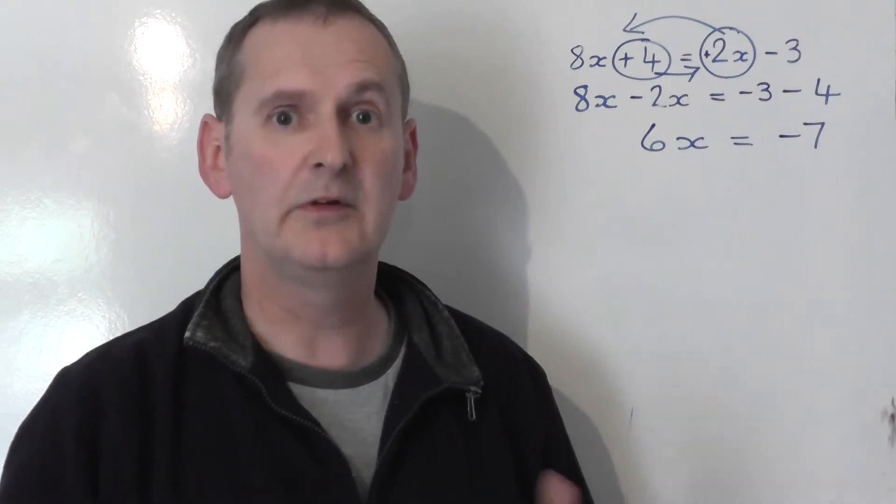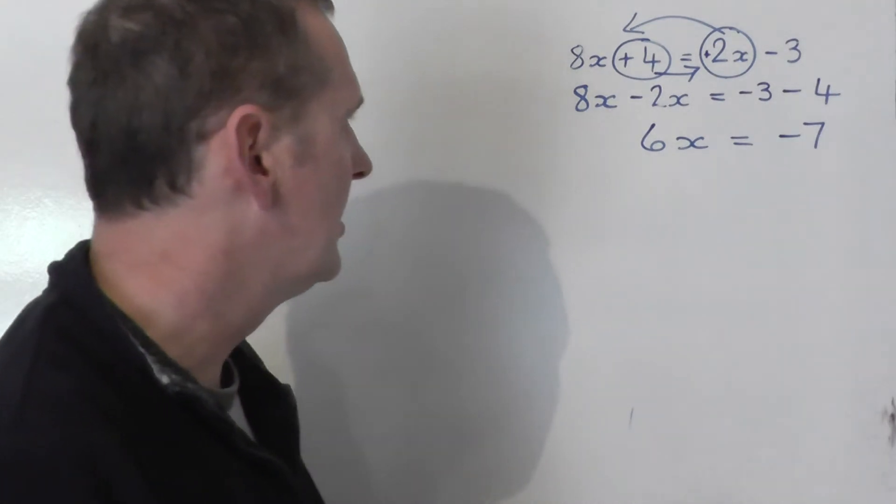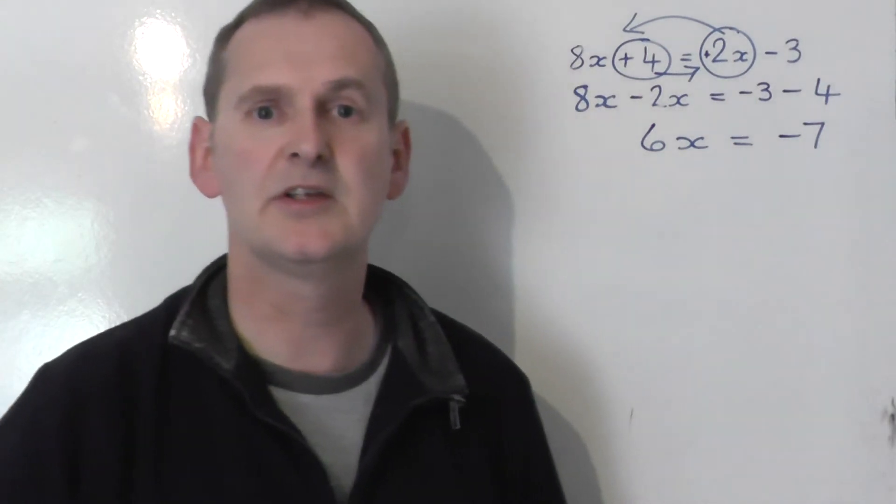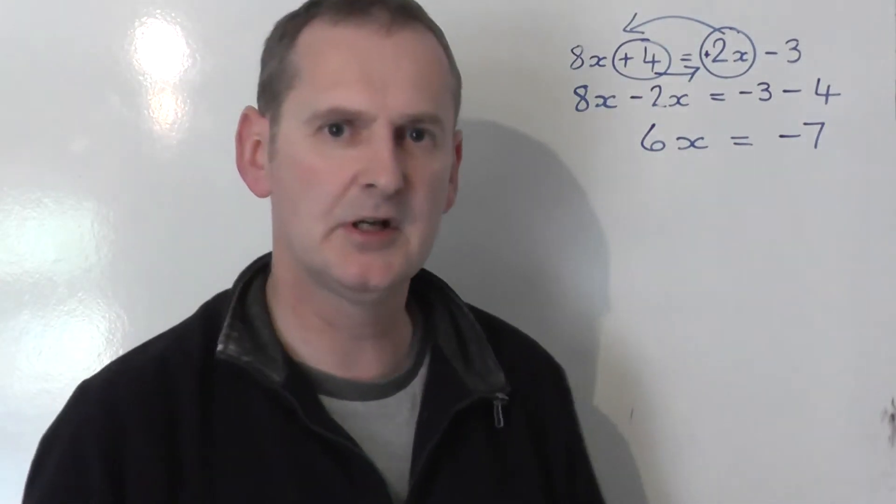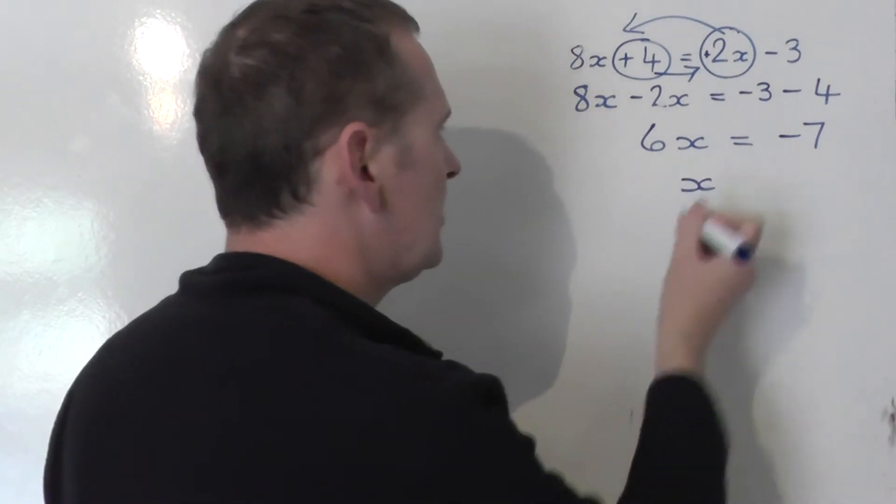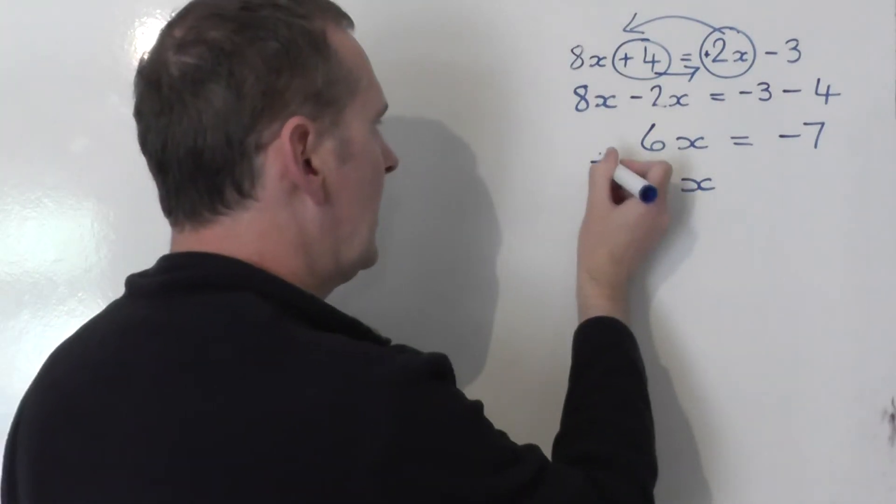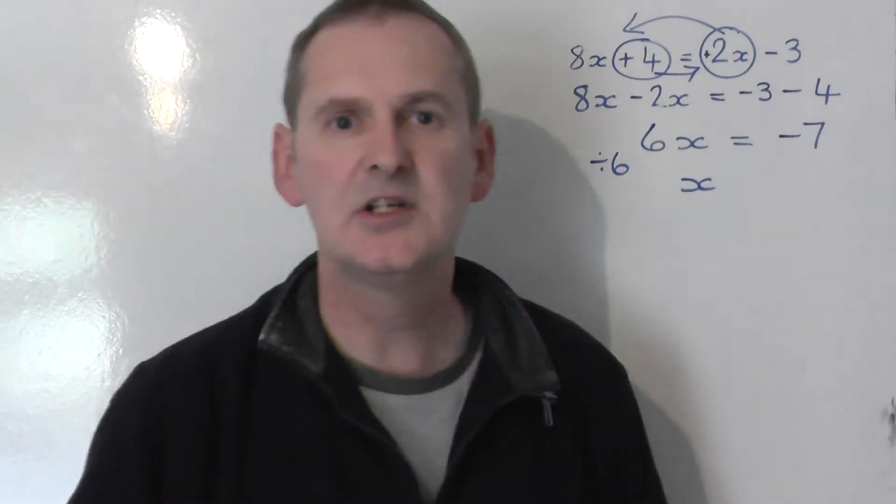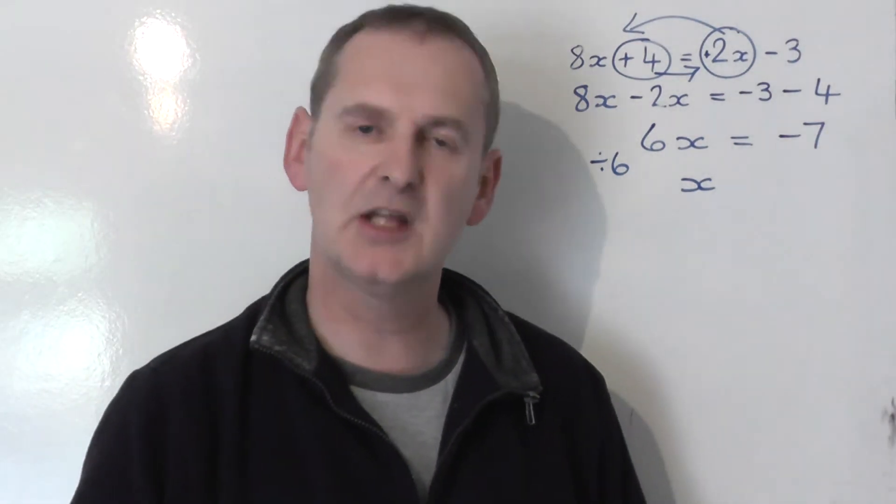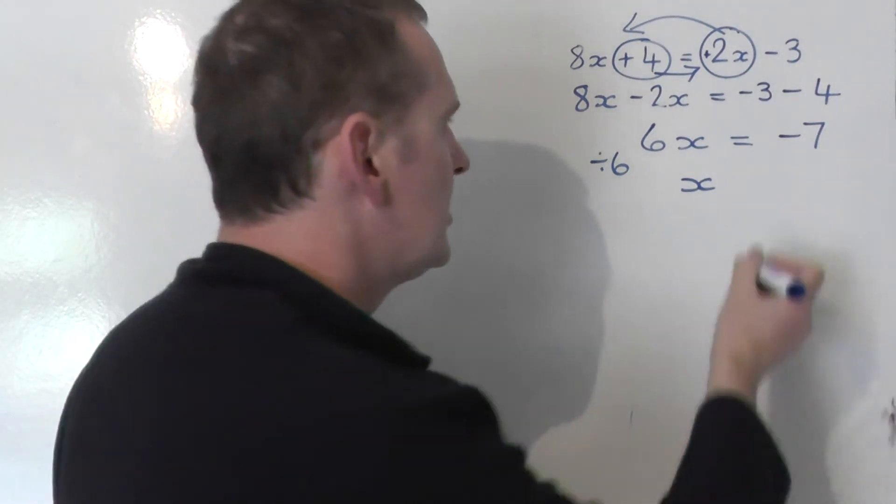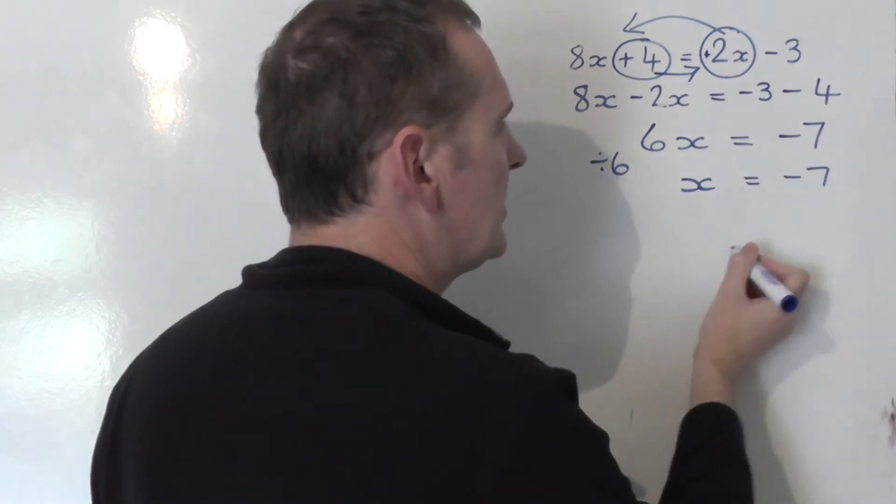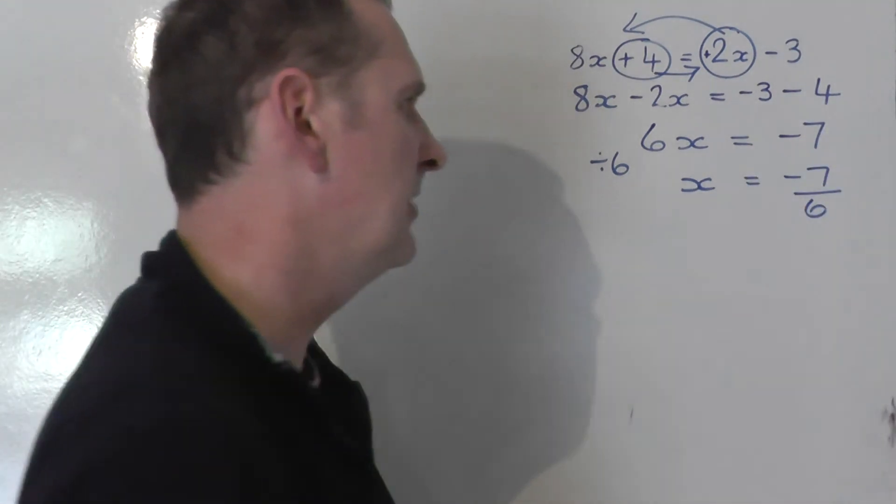Nearly finished now. Well, we've got our 6x's on the left is equal to minus 7 on the right. But I don't want 6x, I want to know what x is. So I have to change the 6x into a single x. To do that, I'm going to share the left-hand side by 6. To keep the equation balanced, I'm going to share the other side by 6 as well. So I take the minus 7 on the right-hand side and I share that by 6.